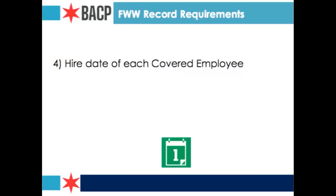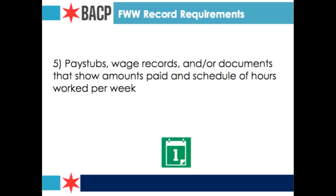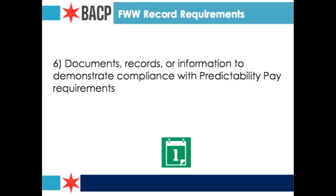In an investigation we look at pay stubs, wage records, and documents that show amounts paid and schedule of hours worked per week. Most companies keep wage records through ADP, which shows hours, types of pay, overtime, and tips. In restaurants or other industries your classic pay stub helps; some people just keep checks. It depends on the business model you have, which would dictate what types of documents you produce.